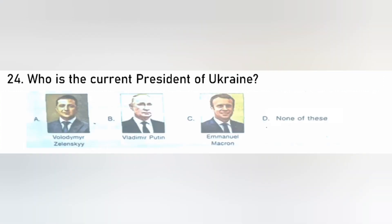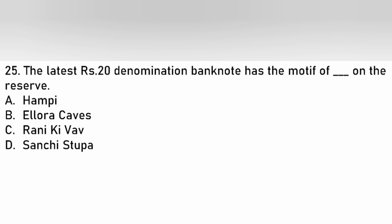Who is the current President of Ukraine? Volodymyr Zelensky, Vladimir Putin. The latest rupee demonetization banknote has the motive of Ellora Caves on the reverse. The answer is B. Ellora Caves.